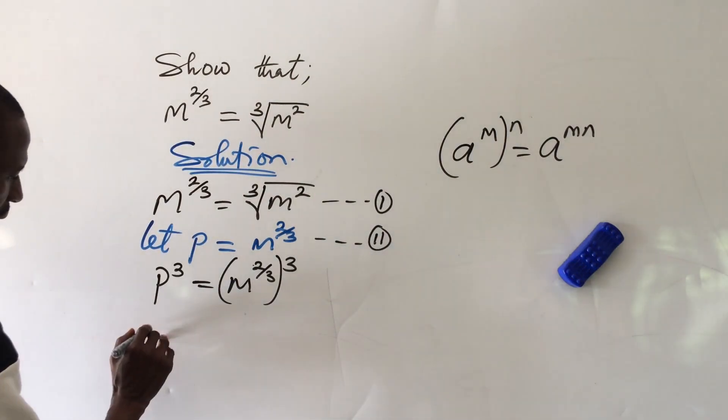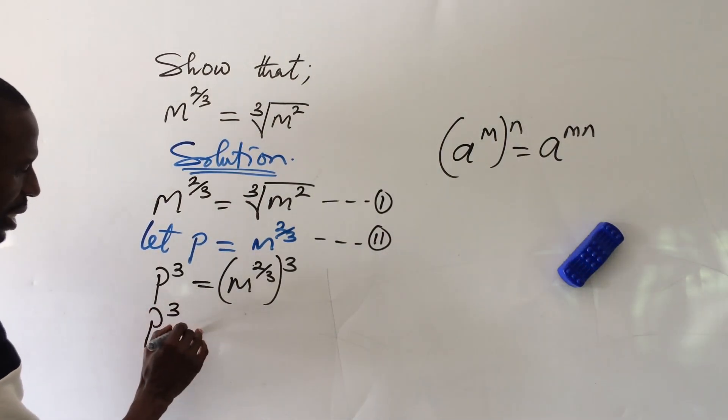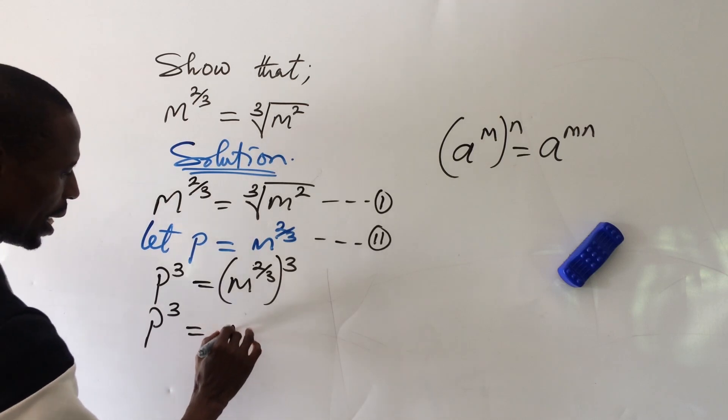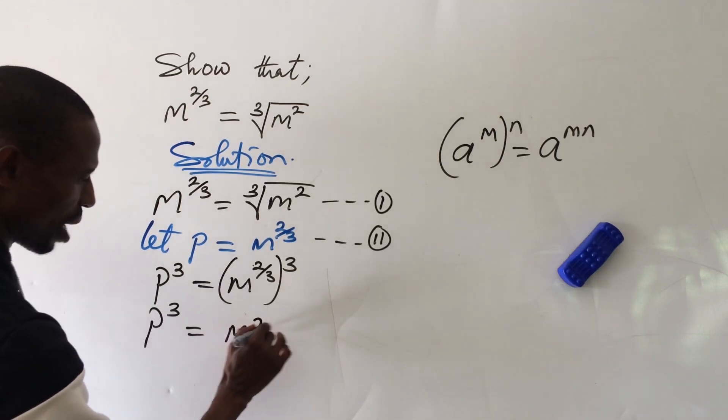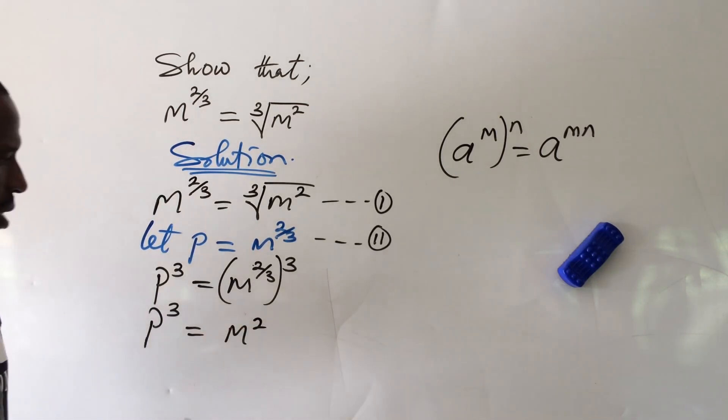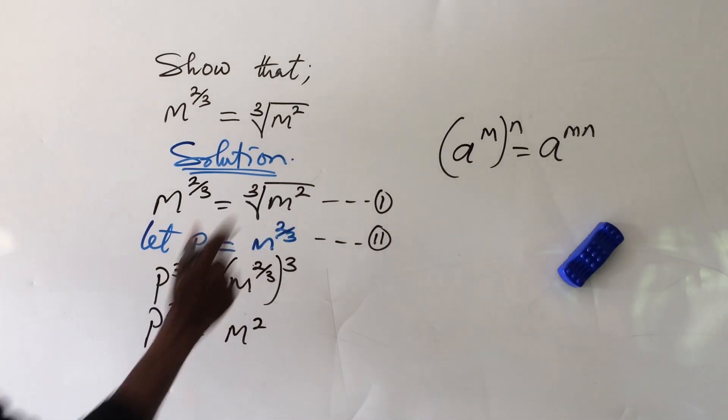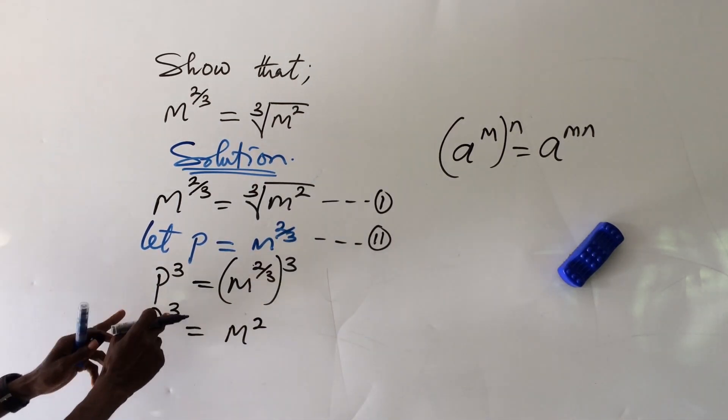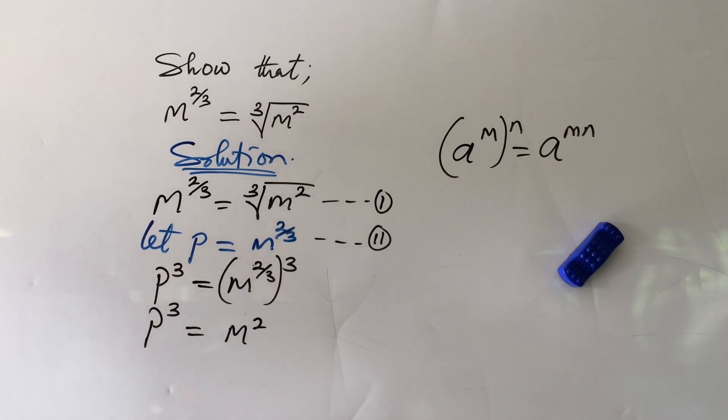And so here we'll be left with p to the power of 3 equal to m to the power of 2. Very easy. Because these 3, we cancel out these 3. I'm looking for p here. What do I do to get my p from here? I will take the cube root of both sides.